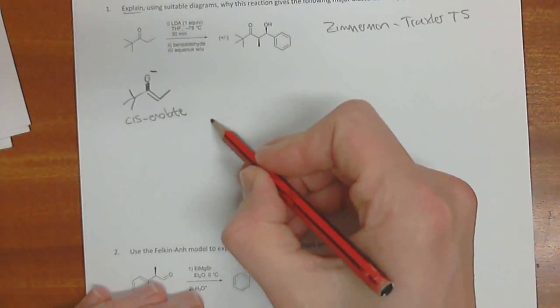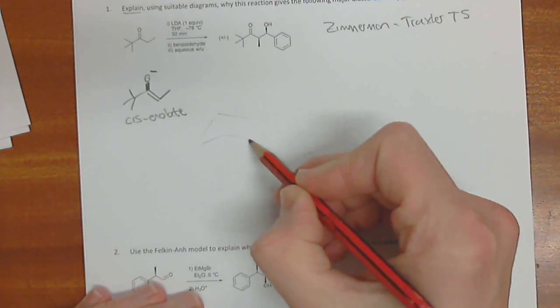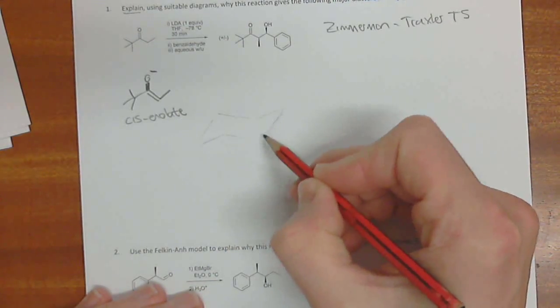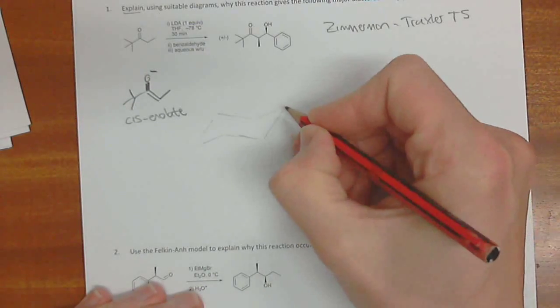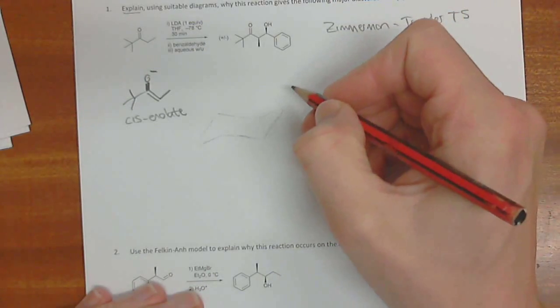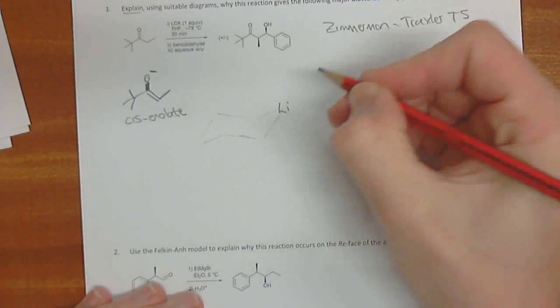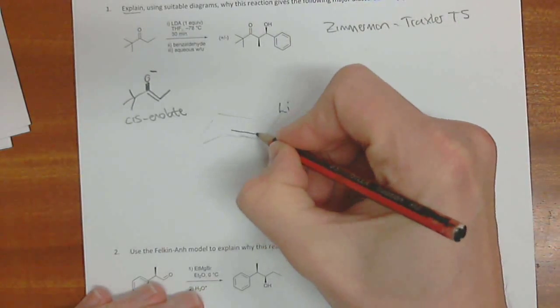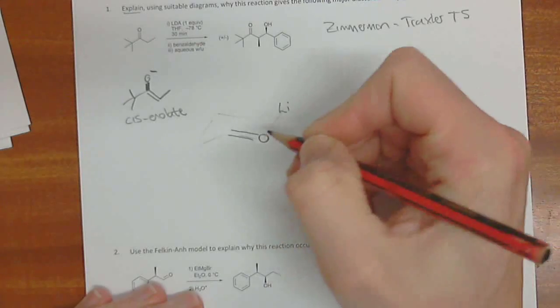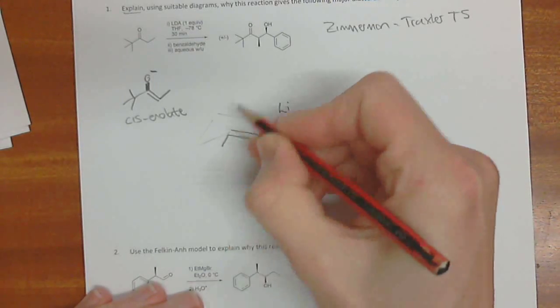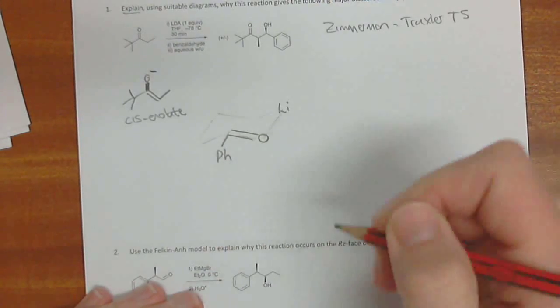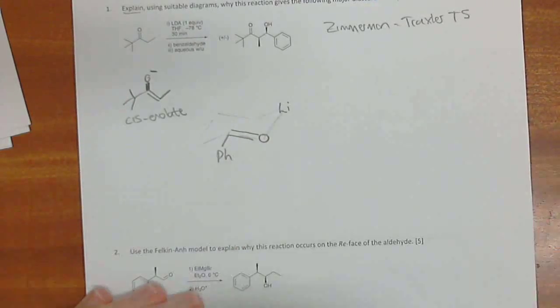And then we need to do the actual Zimmerman-Traxler itself. So we sketch out our rough idea of the chair. And I was really impressed with you. Generally speaking, you guys were getting this part right, and I like that. And so we stick our aldehyde here. And notice that the aldehyde, the phenyl, the benzaldehyde that we got there, we put this in the equatorial position.